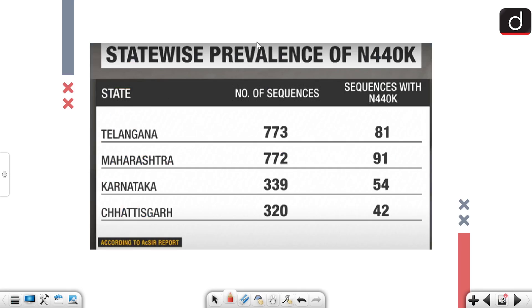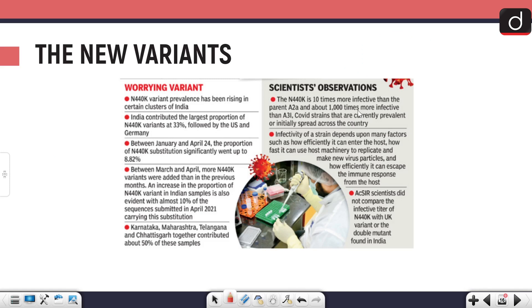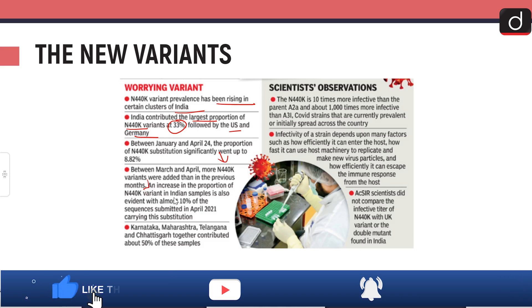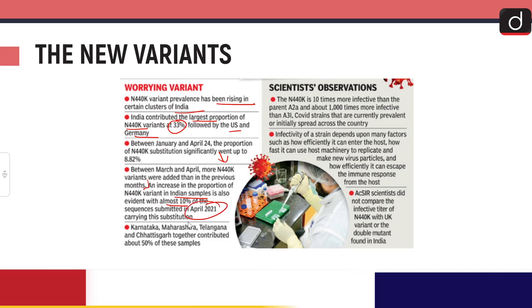If we talk about the statewide prevalence of N440K: Telangana, Maharashtra, Karnataka, Chhattisgarh. This is worrying because this variant has been rising in certain clusters. India contributed the largest proportion of N440K variants at 33%, followed by the US and Germany. Between March and April, more N440K variants were added than in previous months. An increase in the proportion of this variant in Indian samples is evident, with almost 10% of sequences being submitted in April 2021.